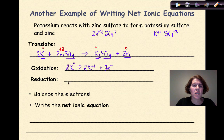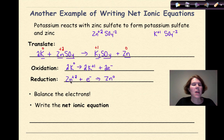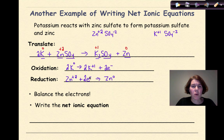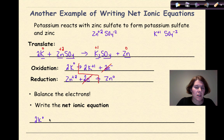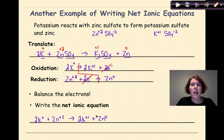Then we go over to the zinc: Zn⁺² is going to gain some number of electrons and become Zn⁰. As zinc goes from an ion to an atom, it's going to gain 2 electrons. So I'm going to put my stair step in and cancel my electrons — 2 electrons lost, 2 electrons gained. Then I add the two half reactions together: 2K⁰ + Zn⁺² yields 2K⁺¹ + Zn⁰. And as a result, I have my net ionic equation.